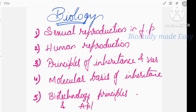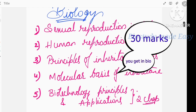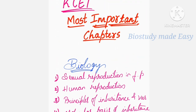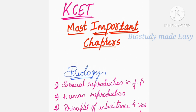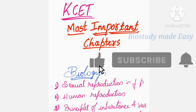The last important Biology chapters are Biotechnology Principles and Processes, and Biotechnology Applications. So these are the important chapters from all subjects — Mathematics, Chemistry, Physics, and Biology — that can give you around 30 marks in KCET. Make sure you don't skip these chapters. Study well, prepare well, and score good marks in KCET. Happy learning, all the best!